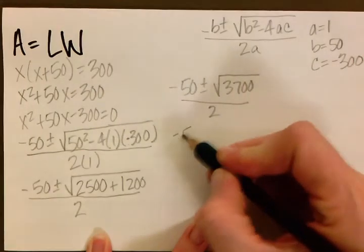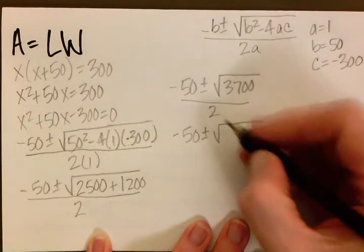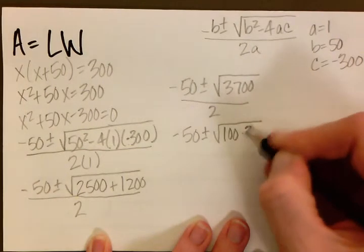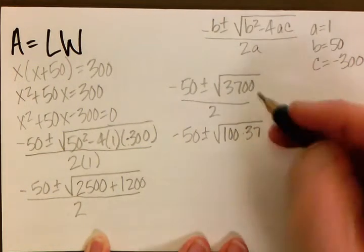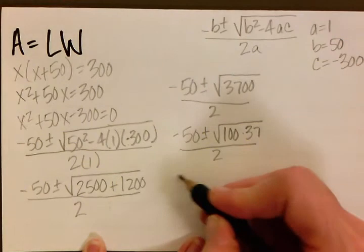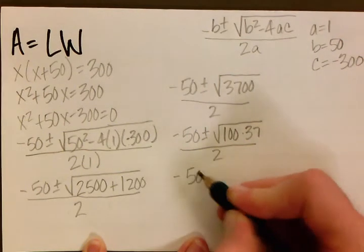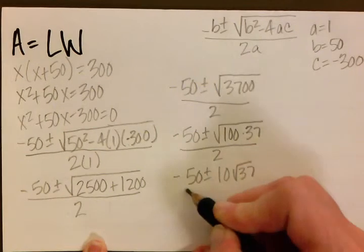Then we have negative 50 plus or minus square root of 3,700 all over 2. To make this easy for us, we can do negative 50 plus or minus the square root of 100 times 37, and the reason we do that is because we know that the square root of 100 is 10. All of this still over 2. Now we have negative 50 plus or minus 10 square root 37 all over 2.